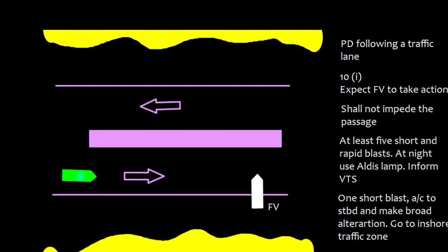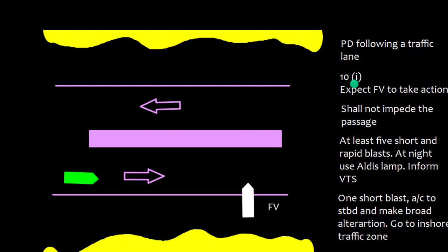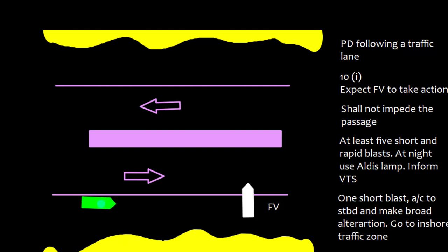In a scenario where you are a power-driven vessel following an appropriate traffic lane and a fishing vessel is crossing and impeding your passage: Rule 10I requires the fishing vessel to take action. If it is impeding your passage, sound at least five short and rapid blasts, use an Aldis lamp at night, and inform VTS. If the vessel still does not respond, give one short blast, alter course to starboard with a broad alteration, and enter the inshore traffic zone.